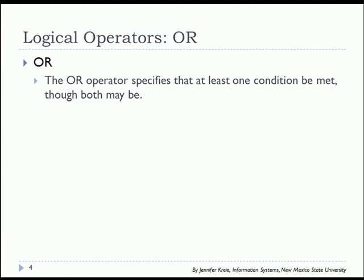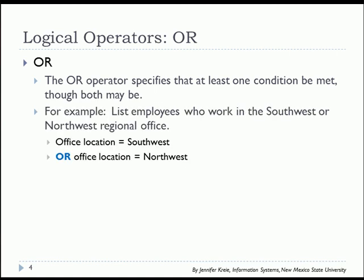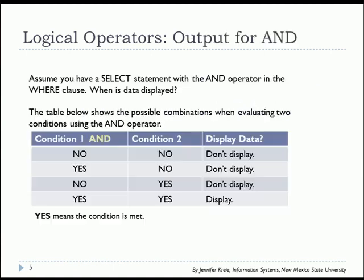The OR operator specifies that at least one condition must be met. Both may be, but only one has to be. So in this example, let's look at employees who work in the Southwest or Northwest regional office. Office location would be equal to Southwest or office location is equal to Northwest.